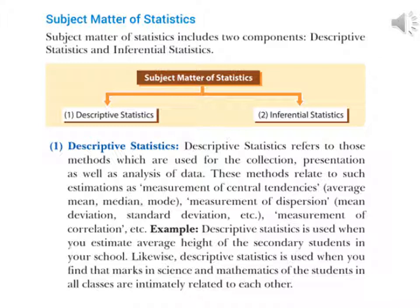These methods relate to such estimations as measurement of central tendencies, measurement of dispersion, measurement of correlation, etc. For example, descriptive statistics is used when you estimate the average height of students in your school, or when you find that marks in science and mathematics of students in a class are initially related to each other.